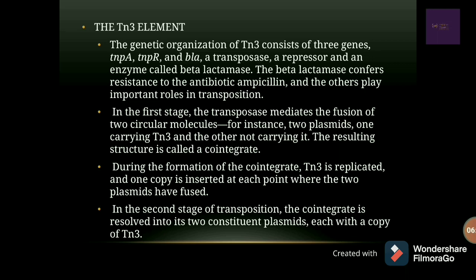During the formation of the co-integrate, the TN3 element is replicated and one copy is inserted into the new plasmid. In the second stage of transposition, the co-integrate is resolved into its two constituent plasmids. Each will now bear a copy of the TN3 element — the original copy in the original plasmid and the newly synthesized copy in the plasmid that was devoid of it earlier.